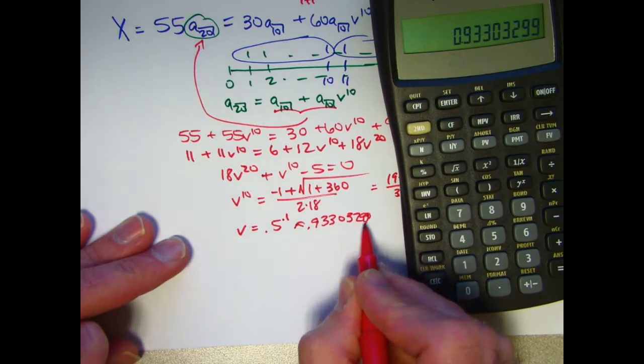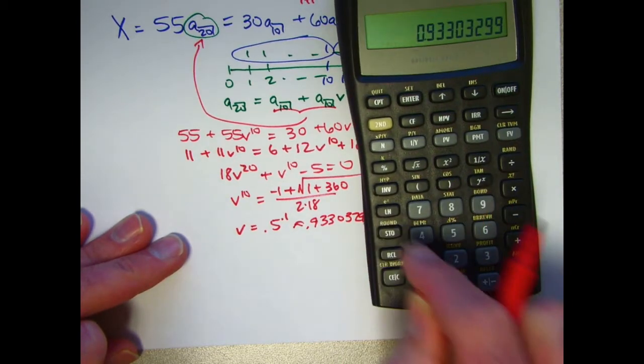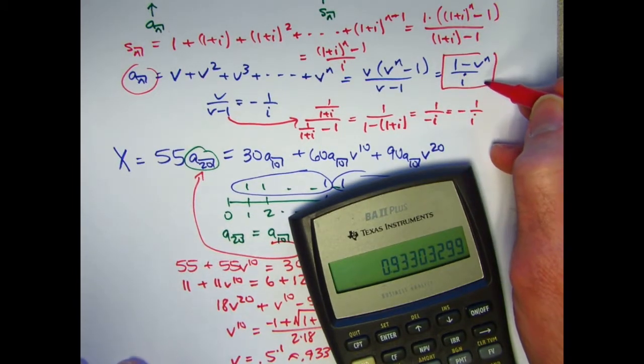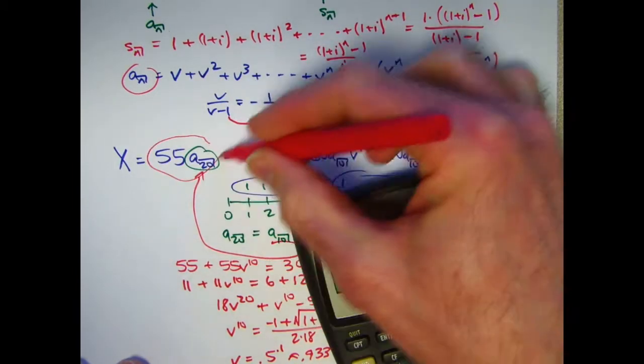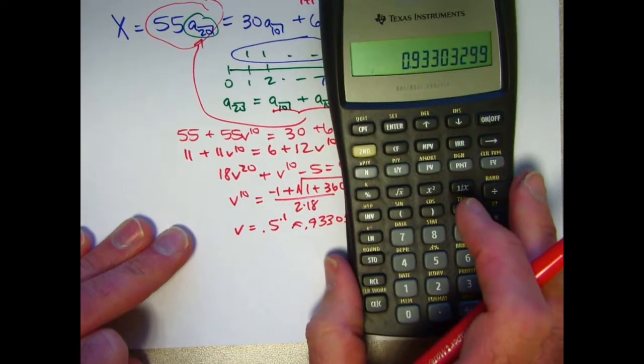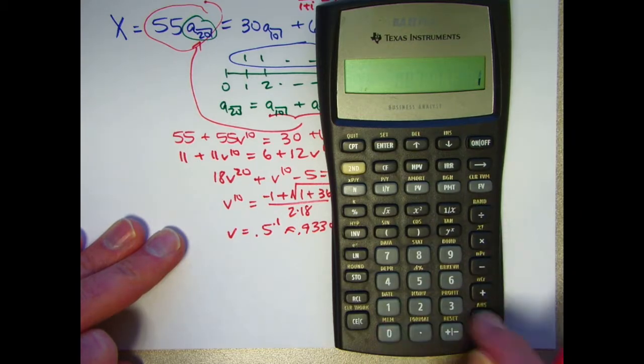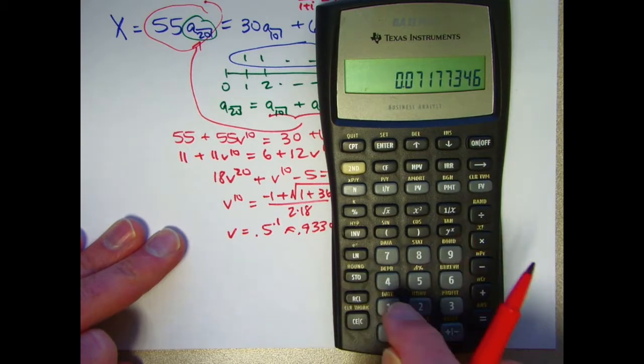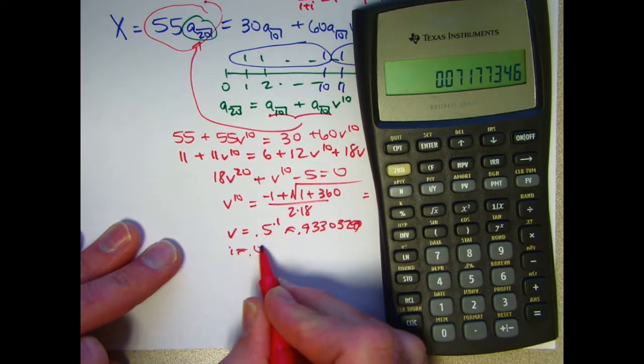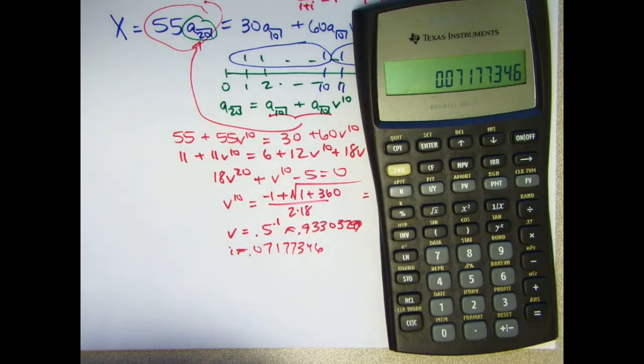Let me store that in register 0. Store register 0. I ultimately want to use this formula here now. Maybe with this part right there. I also need i. If I take the reciprocal of v and subtract 1 from it, that is i. Let me store it in register 1. i is about 0.07177346. So now I can finish the problem.